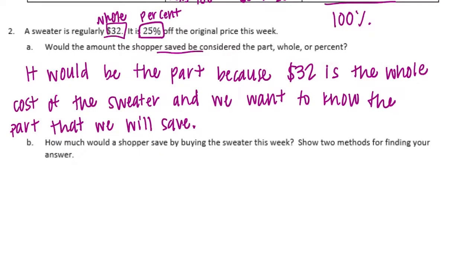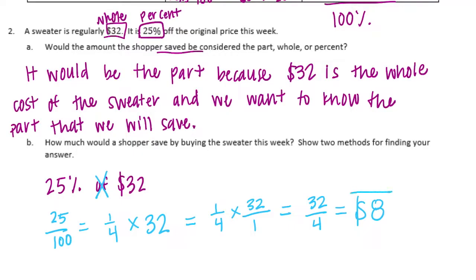B. How much would a shopper save by buying the sweater this week? Show two methods for finding your answer. So we can first start by, we're finding 25% of $32. So I'm going to write that down. And if you remember, back in 5th grade, we learned that of means multiplying times. And if we were to, we don't know how to multiply percents. It's not really something we do, but we do know how to multiply fractions. And we know that 25% is equal to 25 out of 100 if we wanted to reduce that 1 fourth. So 1 fourth times 32 would be equal to 1 fourth times 32 over 1, or 32 fourths. And 32 divided by 4 is equal to 8. So we can say she would save $8.